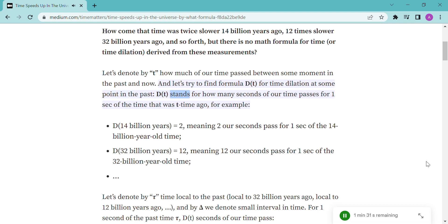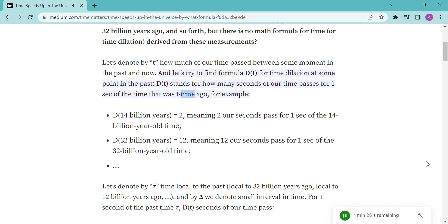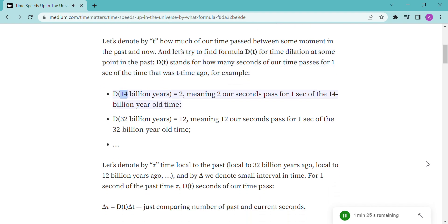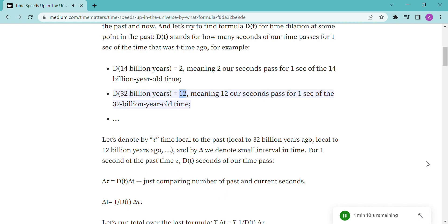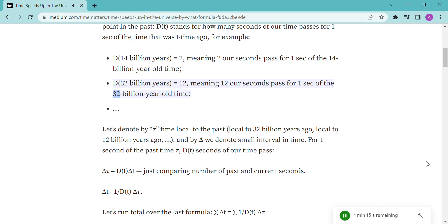DT stands for how many seconds of our time passes for one second of the time that was T time ago. For example, D 14 billion years equals 2, meaning 2 of our seconds pass for one second of the 14 billion year old time. D 32 billion years equals 12, meaning 12 of our seconds pass for one second of the 32 billion year old time.